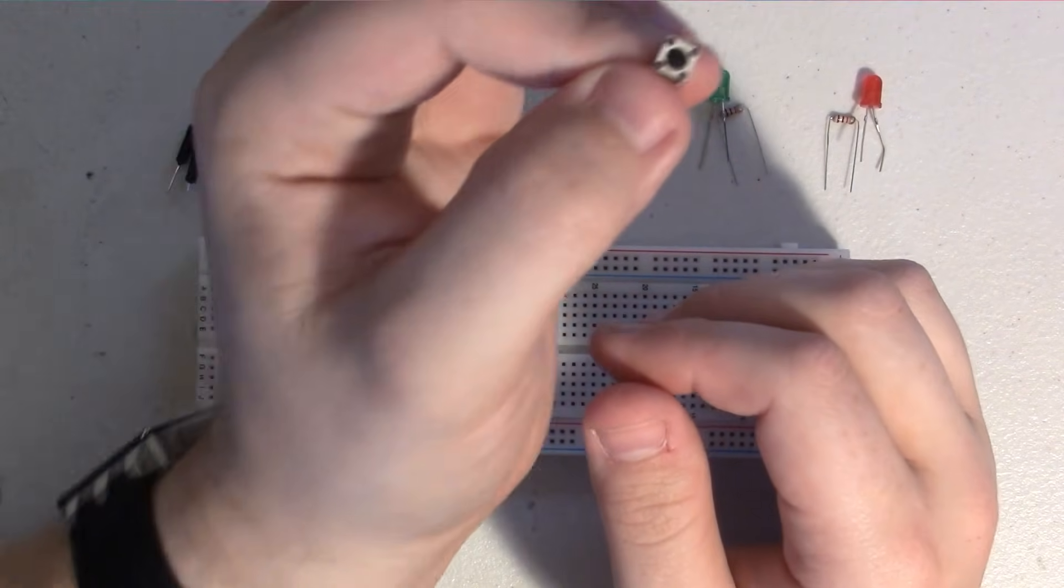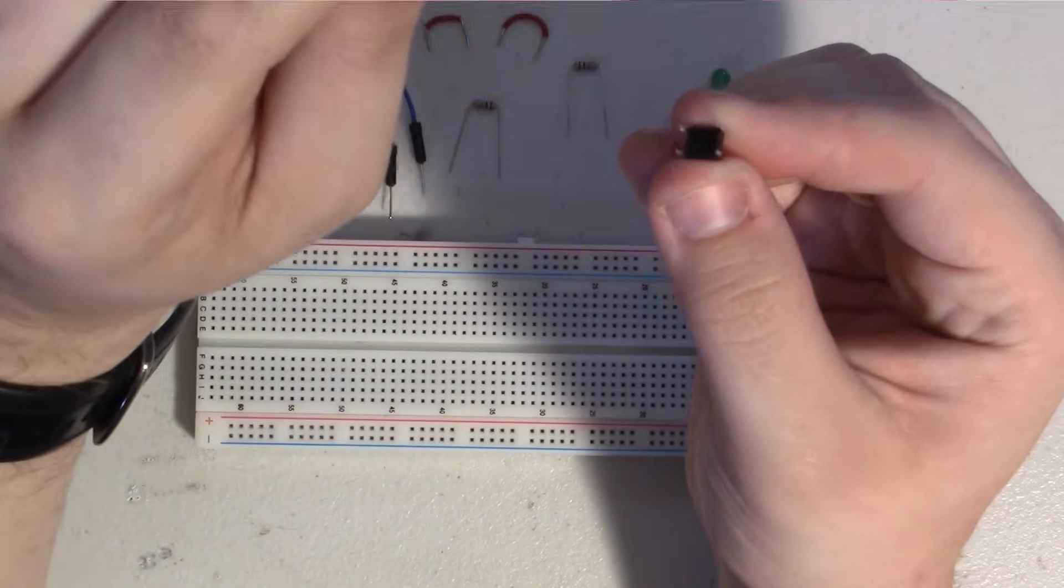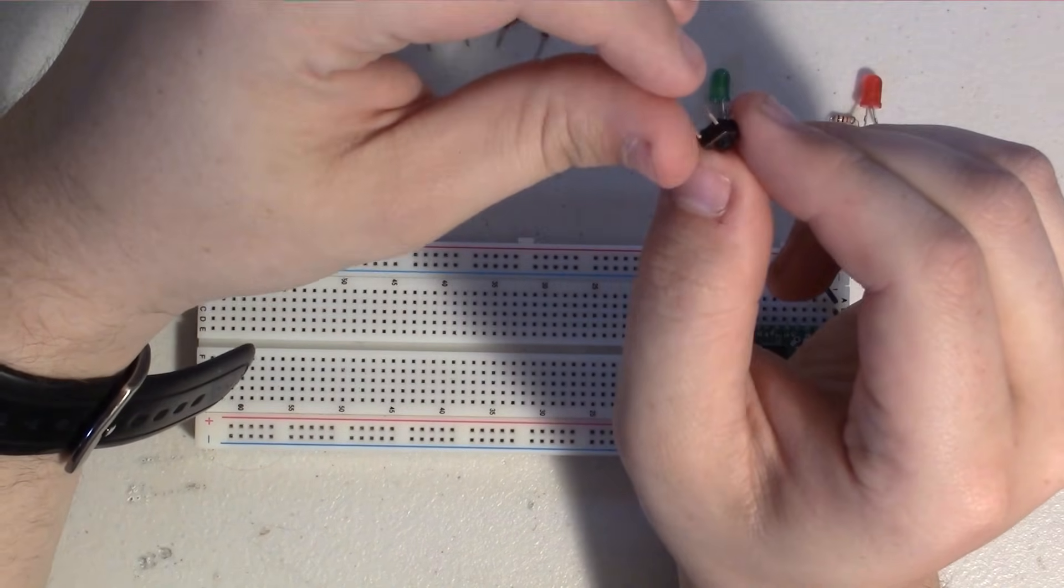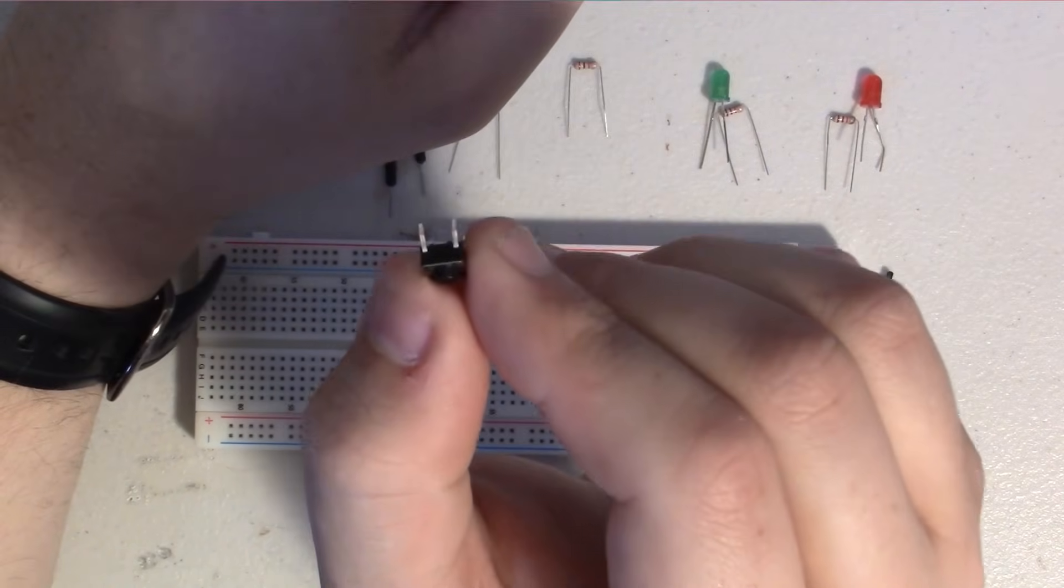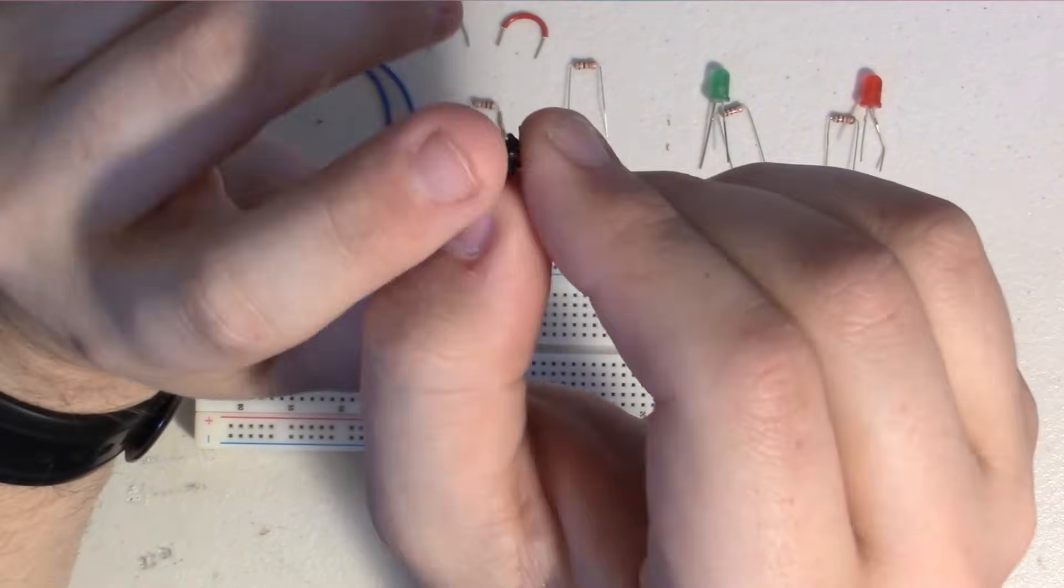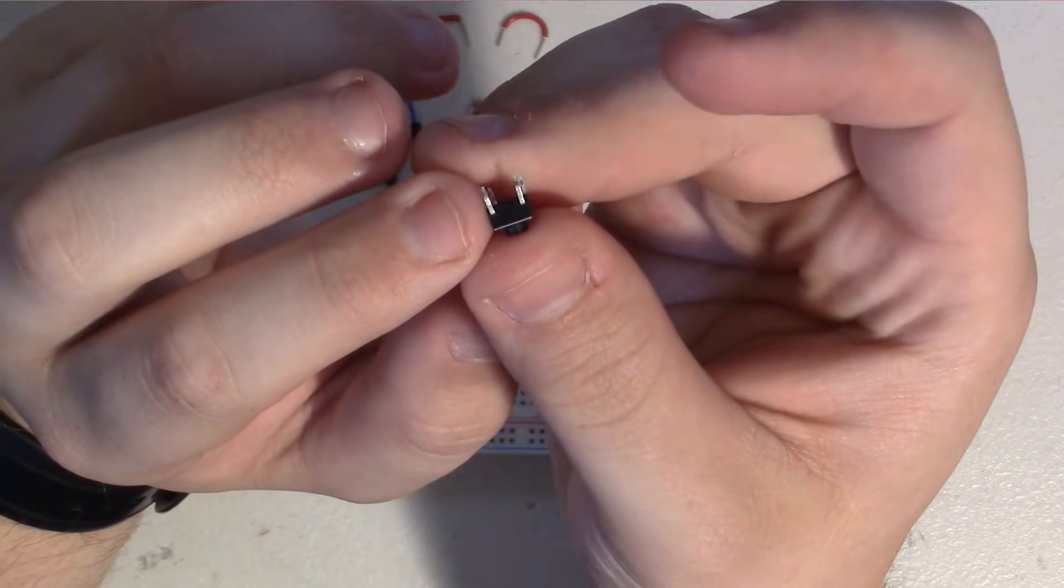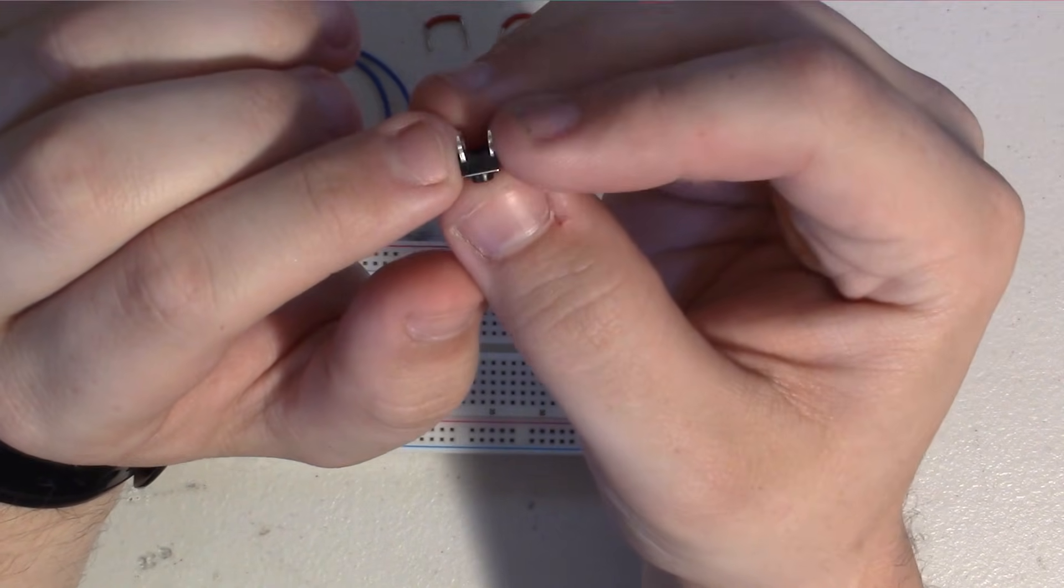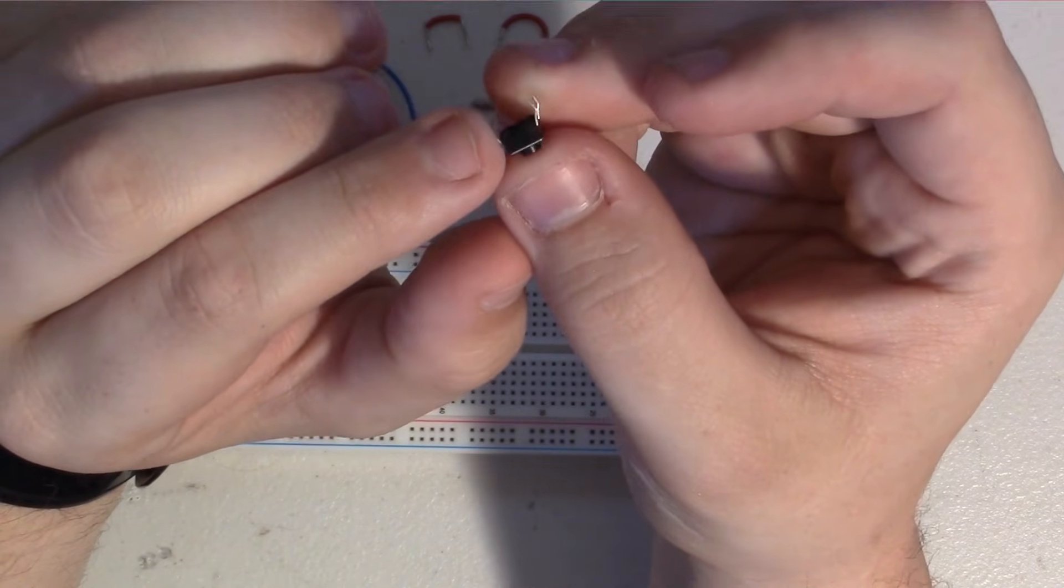So for the button, if you have these little tactile buttons, they come with four little legs. The way I remember how to wire these is the legs come out of one of the sides, either this side or this side. They do not come out of this side here.